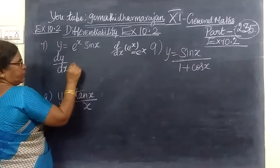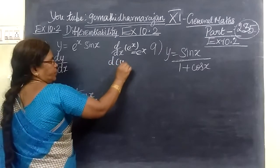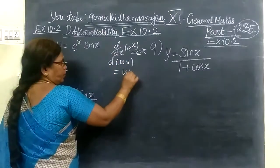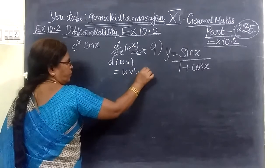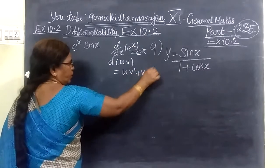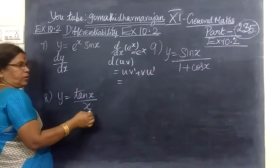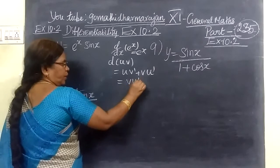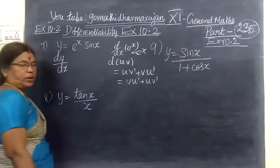This is a uv product rule problem. d of uv equals u·v dash plus v·u dash. So in this way we write v·u dash plus u·v dash.